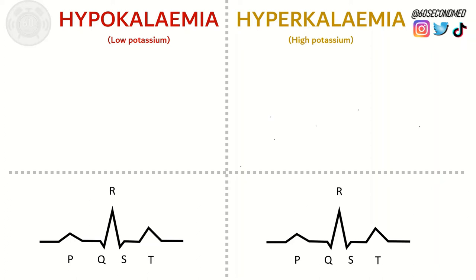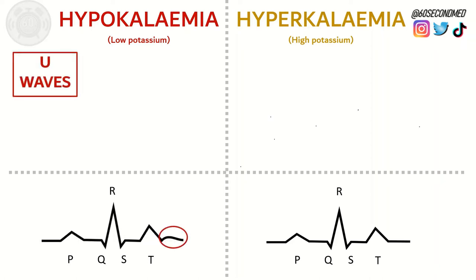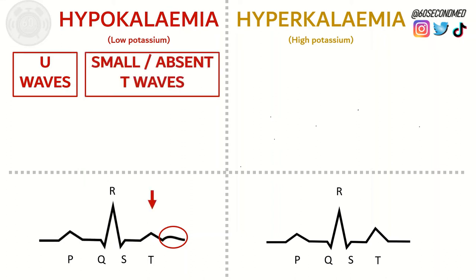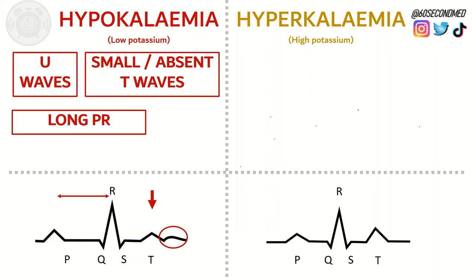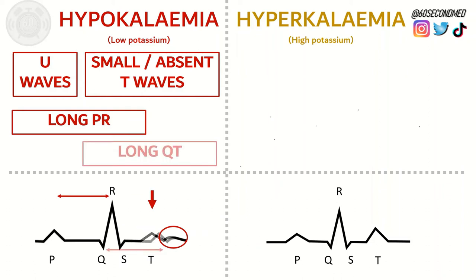Hypokalemia — low blood potassium — could present with U waves, which is a small positive wave that can be seen after the T wave. It could present with small or absent T waves. It could also present with an elongated PR interval and an elongated QT interval.